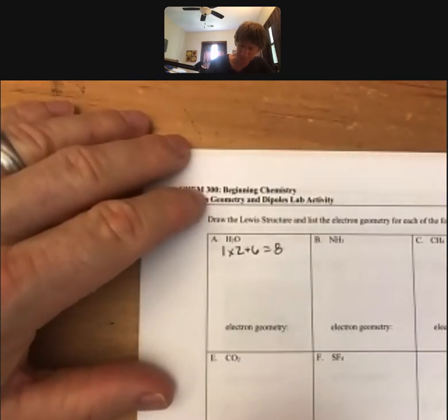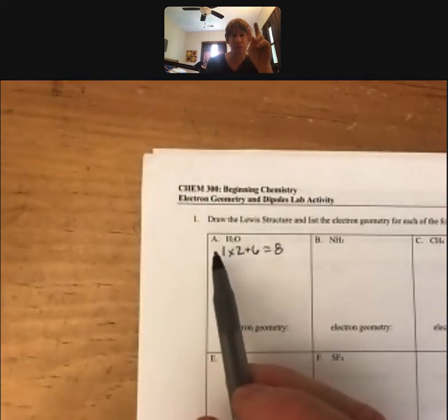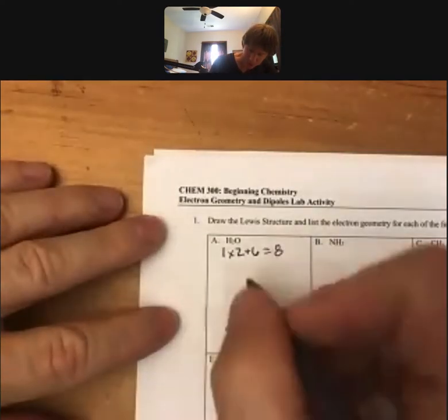Now we know that hydrogen cannot be in the center because hydrogen always wants one bond, which would give it a share of two total electrons. So we'll put the oxygen in the center.